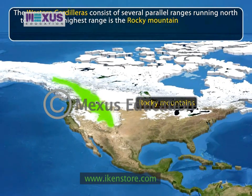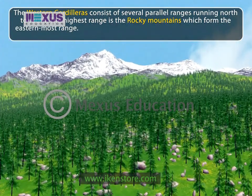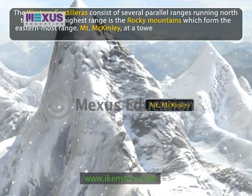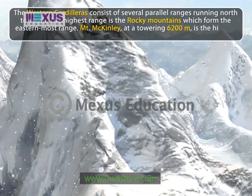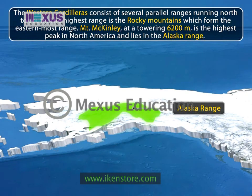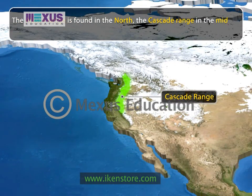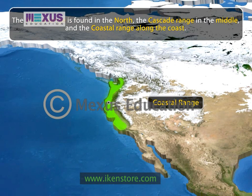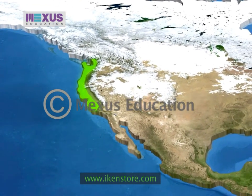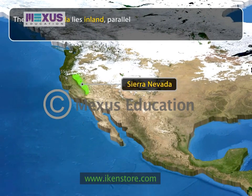The highest range is the Rocky Mountains, which form the easternmost range. Mount McKinley, at a towering 6,200 meters, is the highest peak in North America and lies in the Alaska Range. The Alaska Range is found in the north, the Cascade Range in the middle, and the Coastal Range along the coast. The Coastal Range in particular rises steeply from the coast. The Sierra Nevada lies inland, parallel to the coastal range.